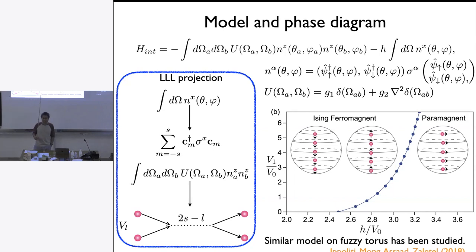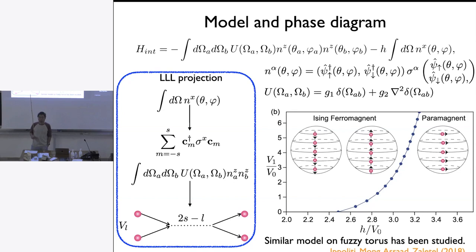Q: About higher-dimensional fuzzy spaces — for the 2D sphere, functions are approximated by N×N matrices and as N→∞ the algebra approaches functions on the sphere. But if you go to three dimensions, the fuzzy space would still be N×N matrices. How do you expect to approximate the 3D space by such an algebra? A: I'm not sure I fully understand your question yet...